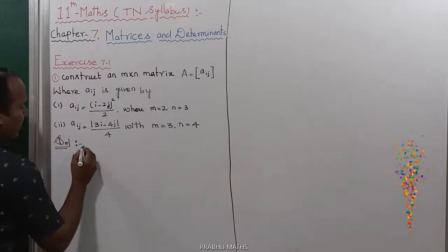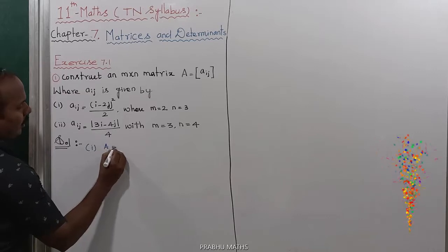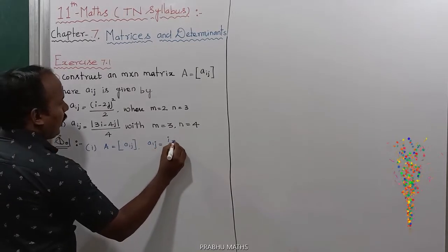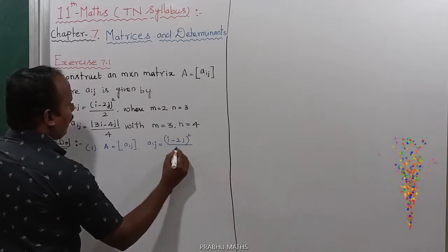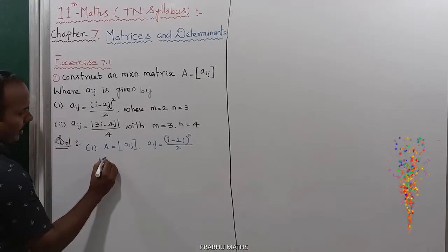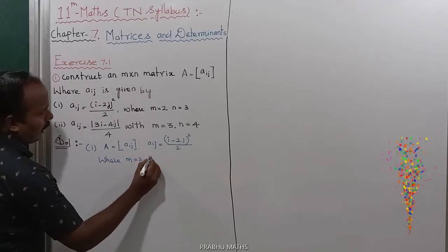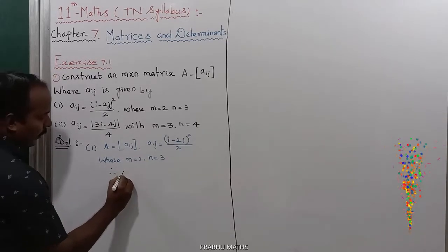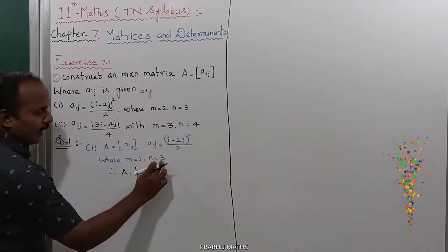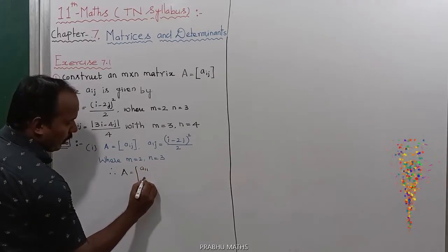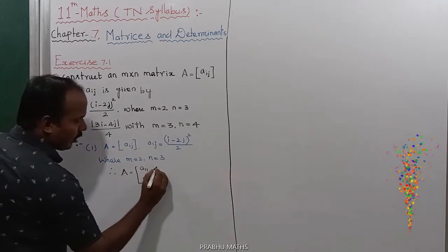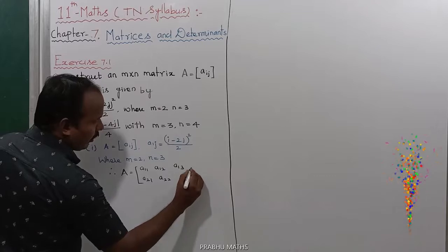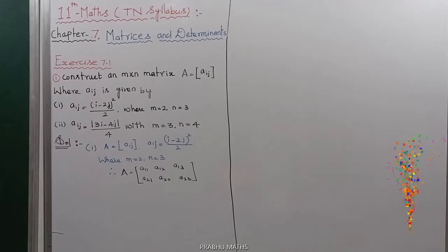For the first subdivision, A is equal to the matrix Aij, where Aij equals (i minus 2j) whole square divided by 2, with M equal to 2 and N equal to 3. Therefore matrix A has 2 rows and 3 columns, with elements A₁₁, A₁₂, A₁₃ in the first row and A₂₁, A₂₂, A₂₃ in the second row. First we find the value of A₁₁.